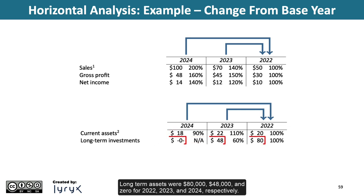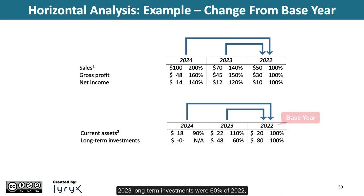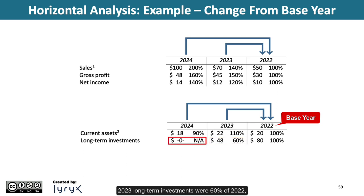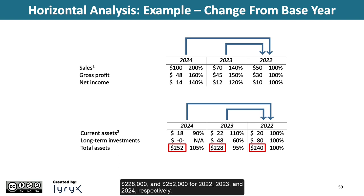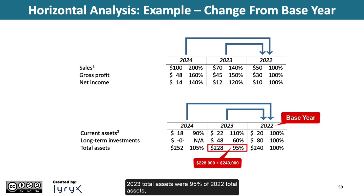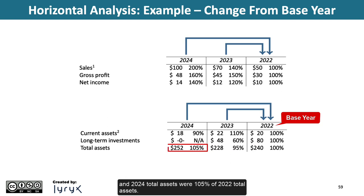Long-term investments were $80,000, $48,000, and zero for 2022, 2023, and 2024, respectively. 2023 long-term investments were 60% of 2022, and 2024 long-term investments were zero, so the calculation really isn't applicable. Finally, total assets were $240,000, $228,000, and $252,000 for 2022, 2023, and 2024, respectively. 2023 total assets were 95% of 2022 total assets, and 2024 total assets were 105% of 2022 total assets.